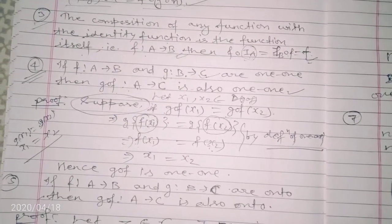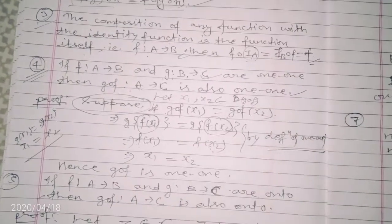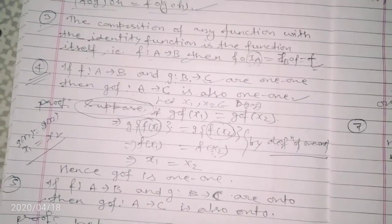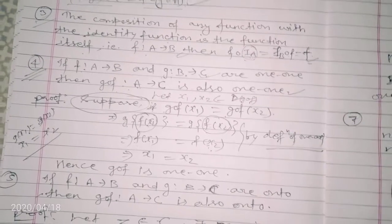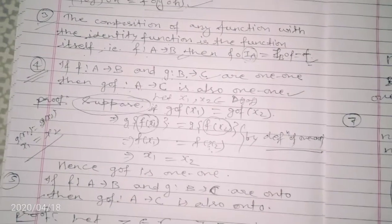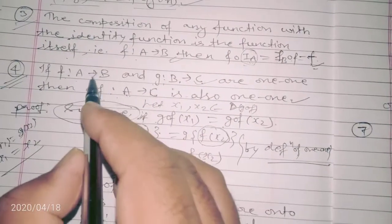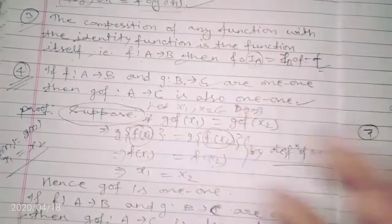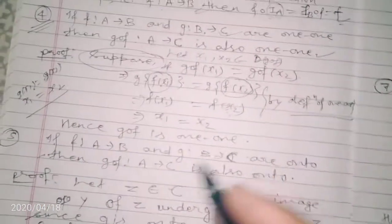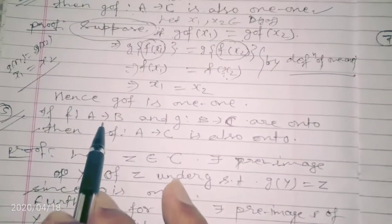However, about g alone we cannot say whether it is one-one or not just from gof being one-one. We will solve this type of question with the help of an example. So if both f and g are one-one, then gof is always one-one.